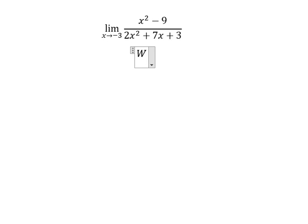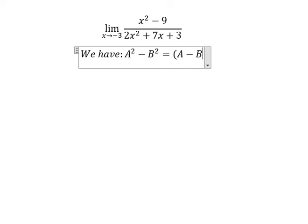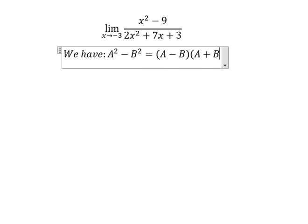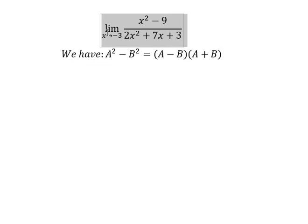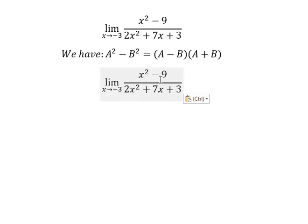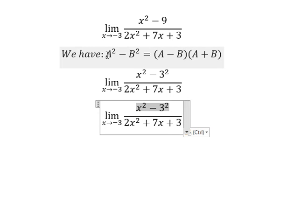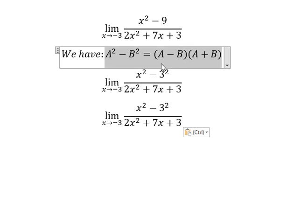We have A squared minus B squared equals A minus B multiplied by A plus B. So if you look carefully about this one, that is about 3 to the power of 2. So we can use this formula similar for the problem here.